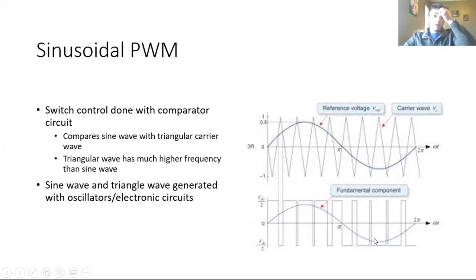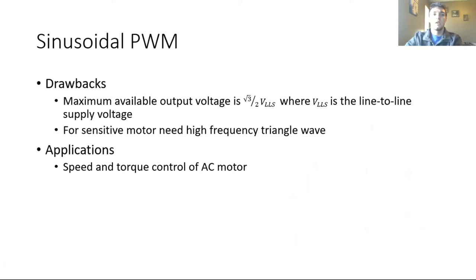Sine waves are often generated with oscillators and the triangle waves are often generated with op amps with a capacitor to turn a square wave into a triangle wave and that square wave is again generated with an oscillator.